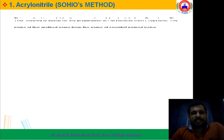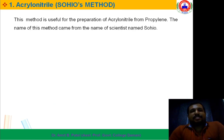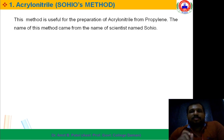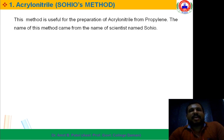In this method, Acrylonitrile is prepared from Propylene. This method is a two-step reaction. The first step is Oxidation, that is Air Oxidation, and the second step is Ammonolysis.